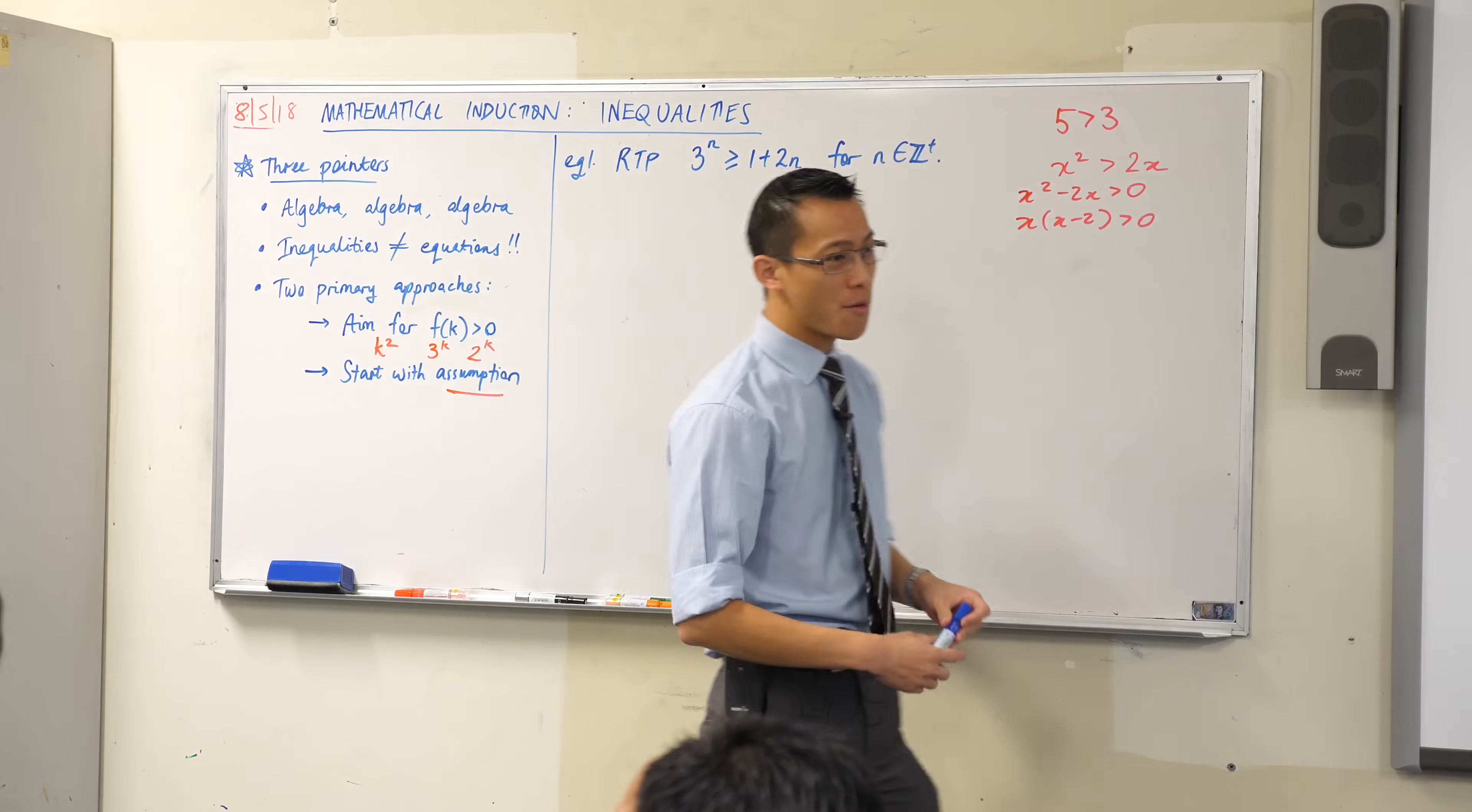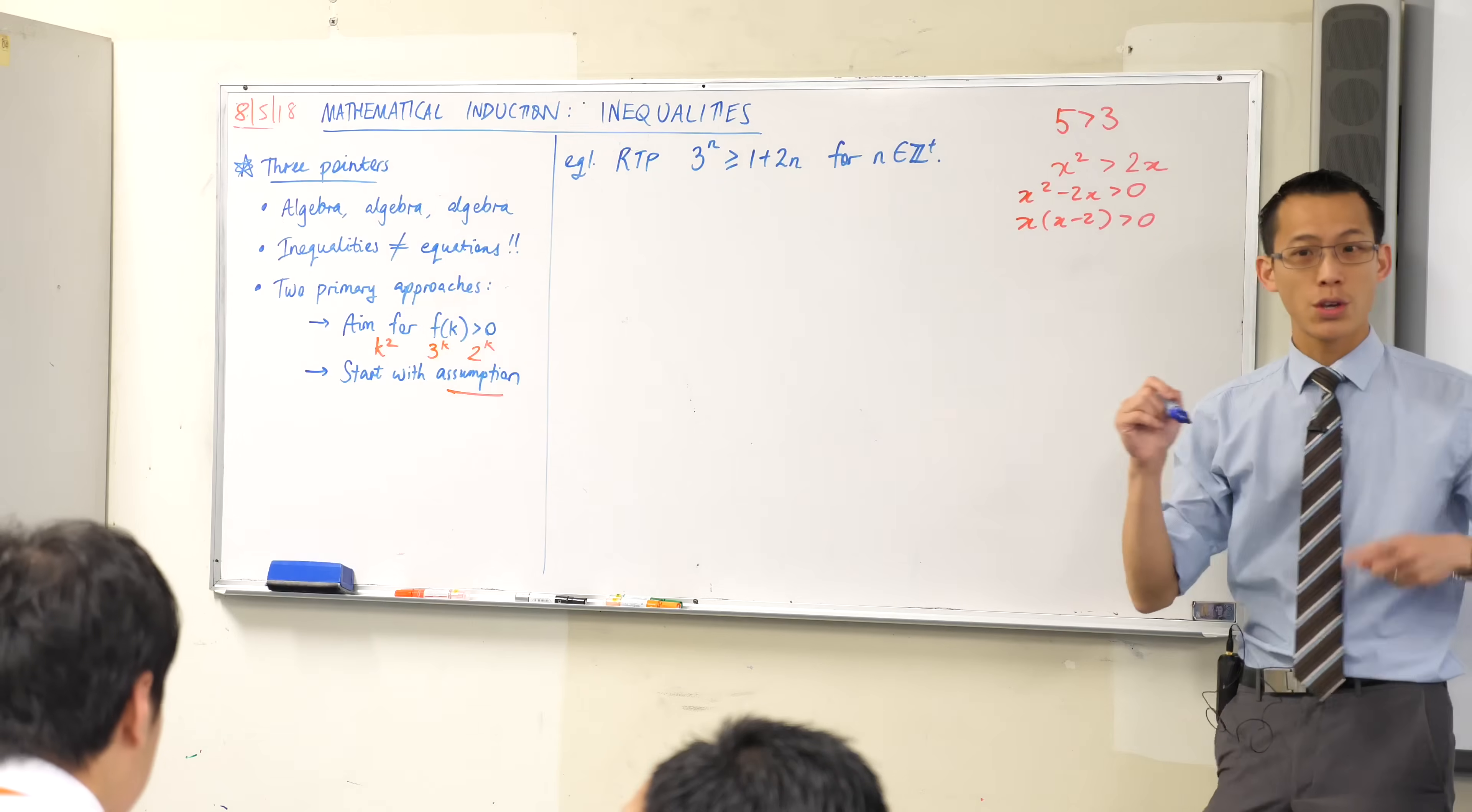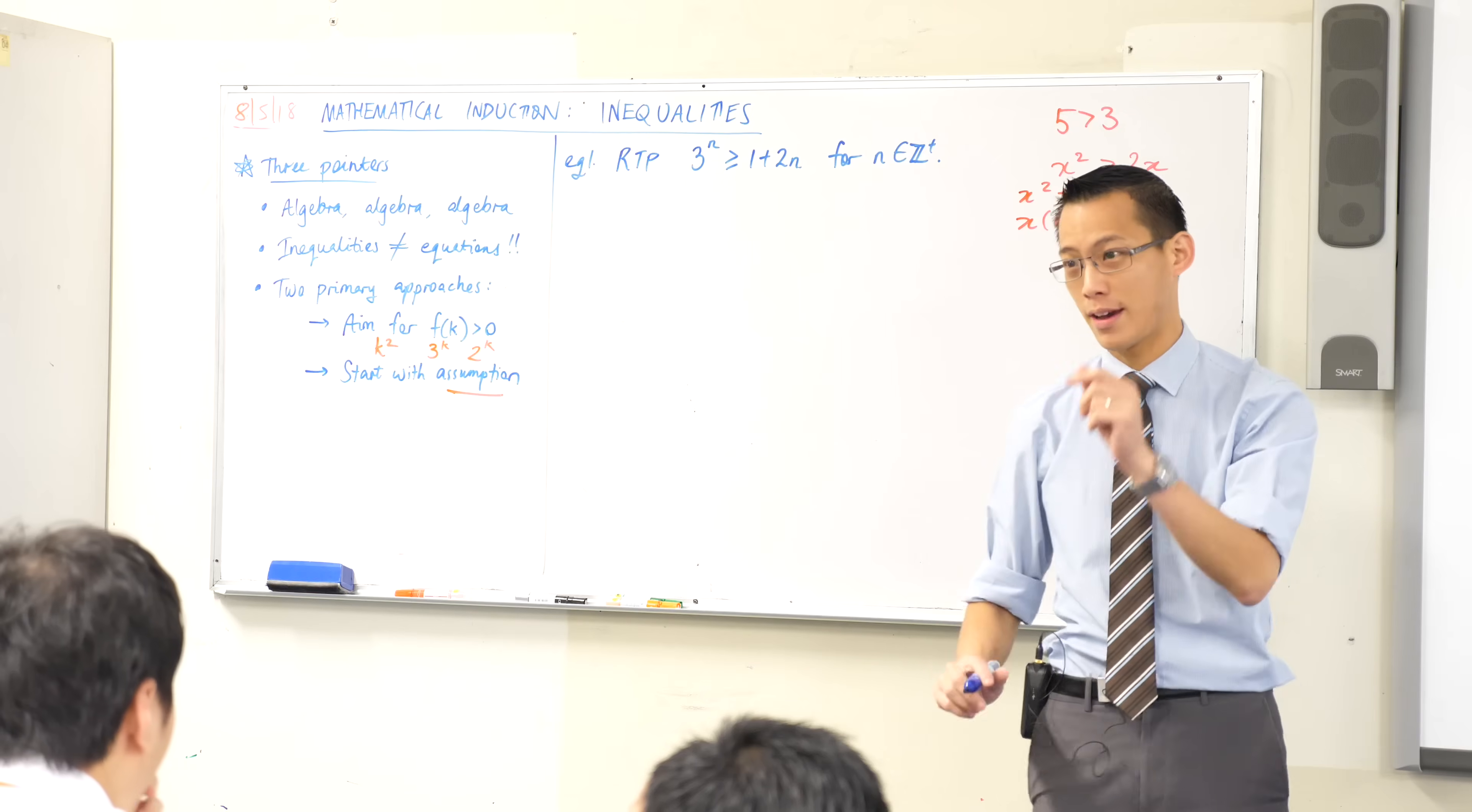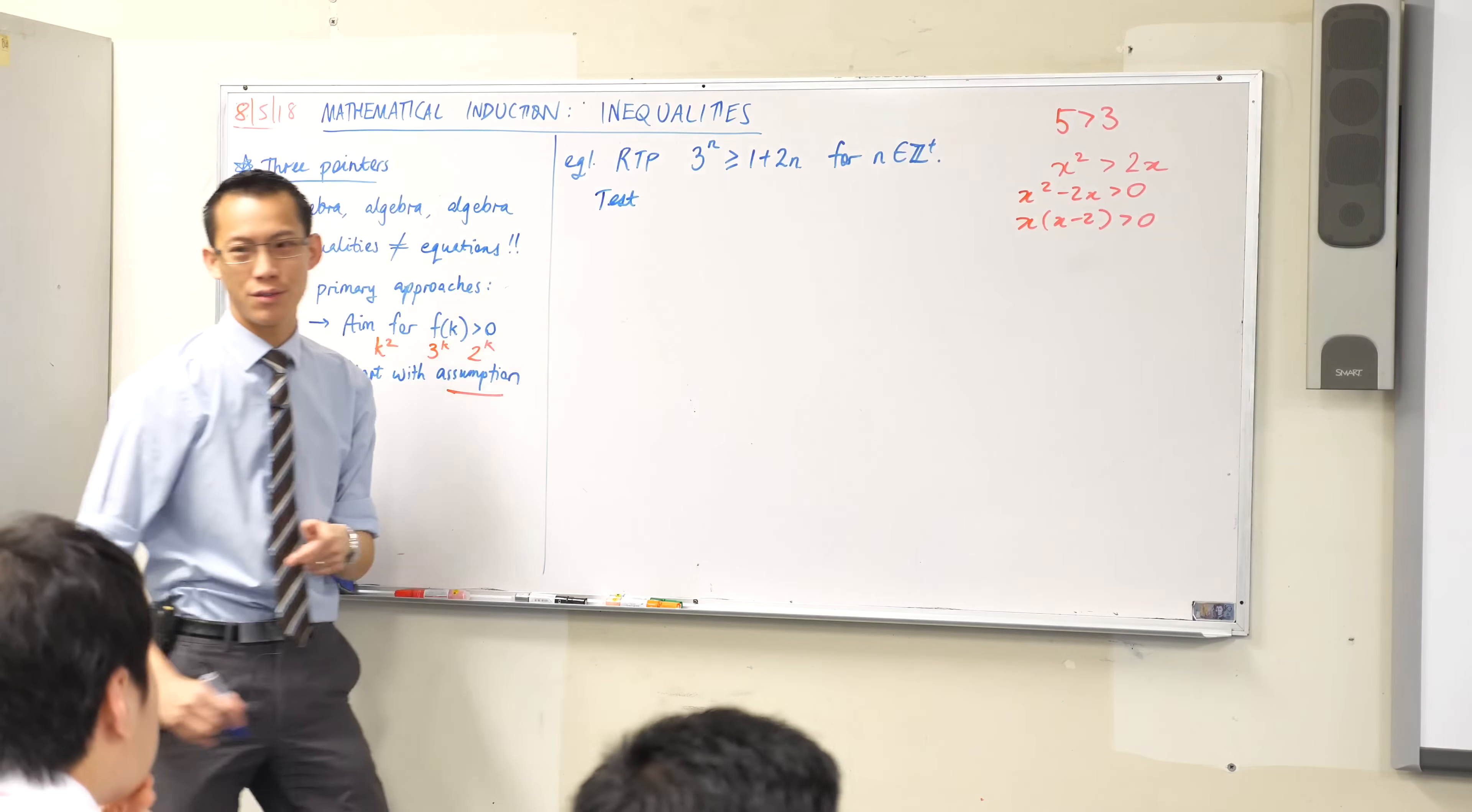So let's begin with this guy. Prove that 3 to the n greater than or equal to—you can write that down, it's not complicated. So let's begin the way we normally do. What's the first step in every proof by mathematical induction?